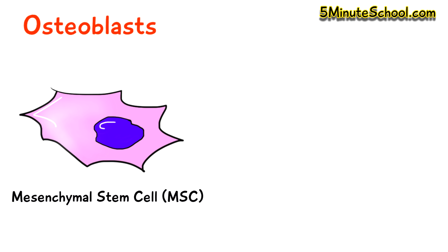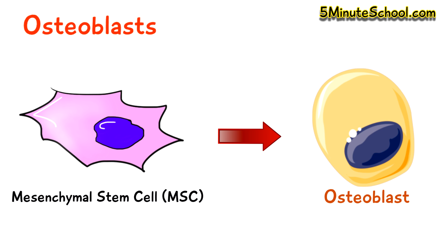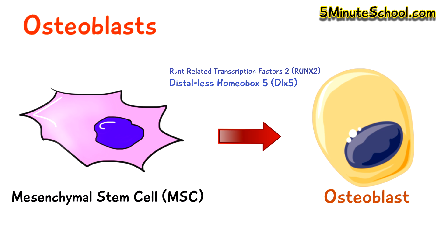Osteoblasts develop from mesenchymal stem cells, and for mesenchymal stem cells to develop into osteoblasts there needs to be the expression of specific genes, including Runt-related transcription factor 2, Distal-less homeobox 5, and Osterix.